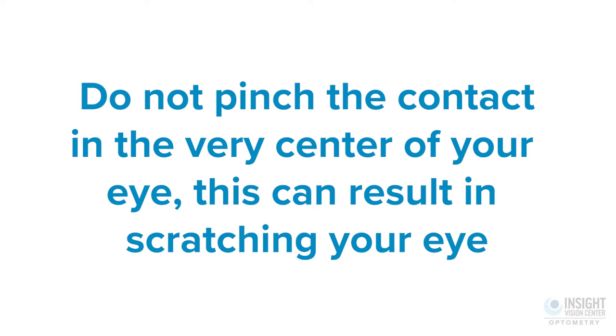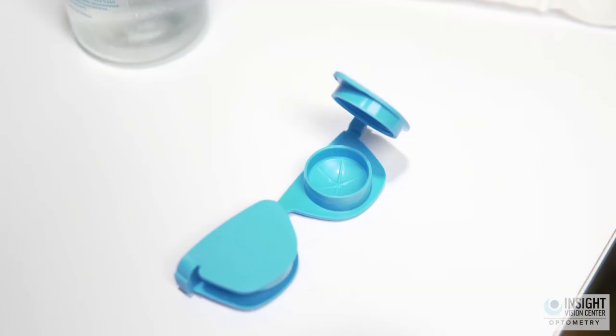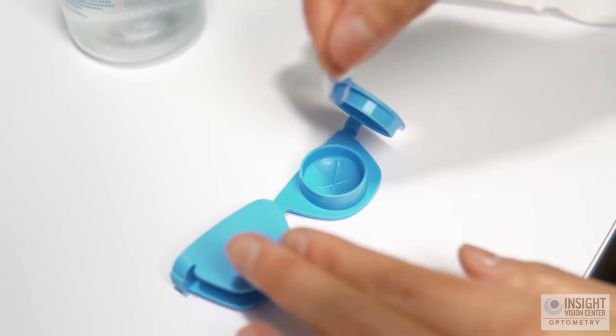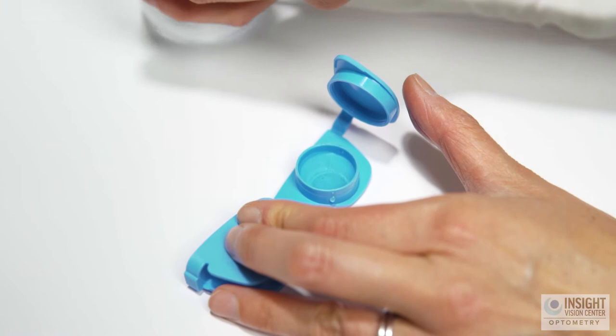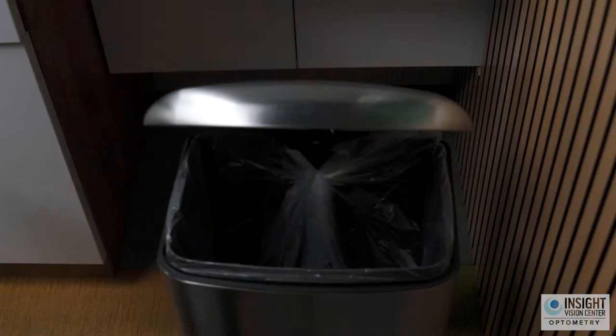Step 4: Do not pinch the contact in the very center of your eye as this can result in scratching your eye. Step 5: If your contact lens is a monthly or bi-weekly replacement, place the contact lens in your case and fill it completely to the top until the contact lens is submerged underneath the solution. If wearing daily contact lenses, simply discard your lenses in the trash.